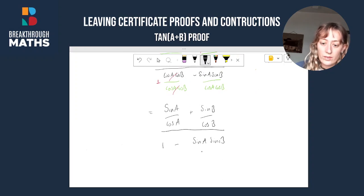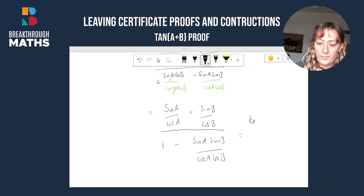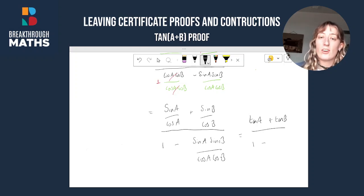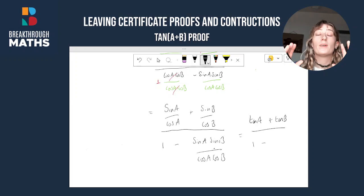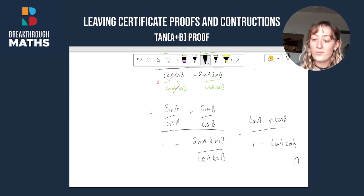Now, what did we say before? tan θ is equal to sin θ over cos θ, so therefore sin a over cos a is just going to be tan a. Same thing again — sin b over cos b is just tan b. That's all over one minus: we have sin a over cos a and sin b over cos b, which is the same as saying sin a over cos a multiplied by sin b over cos b — two fractions multiplied together, you multiply top by top, bottom by bottom. So we can write these as two separate fractions: sin a over cos a is tan a, sin b over cos b is tan b. And you're done — you've proved it!